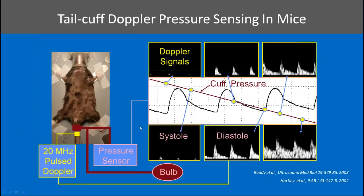The last application is the tail cuff Doppler measurement. A cuff probe is placed on the tail along with a pressure cuff, and we can measure blood pressure non-invasively. This has been validated with simultaneous invasive pressure measurements. As the pressure in the tail cuff drops, flow starts to appear — where it first appears is called systolic pressure, and where it becomes continuous is called diastolic pressure. This is an additional option for those who have the system.